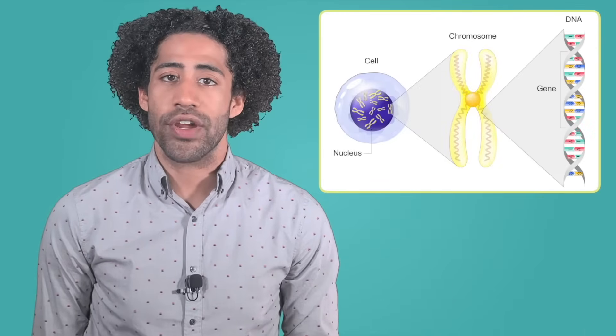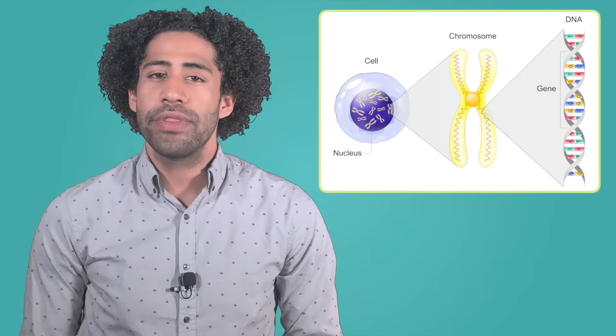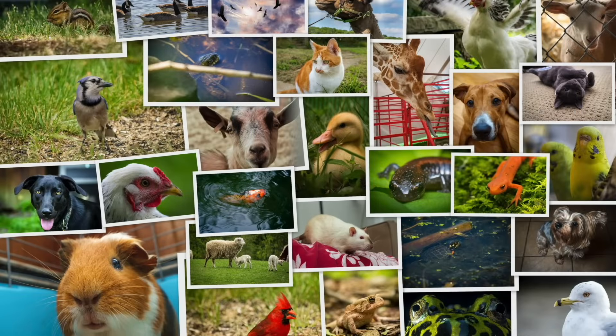In our last unit, we learned about how DNA is organized into genes that code for specific traits in living things. When these traits are passed on via the process of meiosis, the result is offspring with a unique combination of traits from both parents. Additionally, mutations during this process create the possibility of brand new traits. All of these factors together result in a wealth of genetic diversity, or a large amount of different genes in living things.